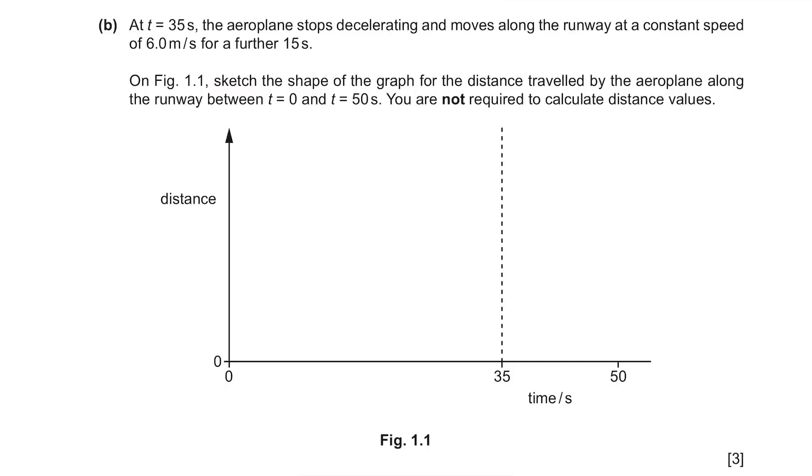I know that some students find drawing graphs challenging but no worries, I got you. Firstly, the distance that the aeroplane travelled when time is 0 is 0. So we start from 0. Then obviously, the distance increased because it travelled across the runway but we also know that there was a change in speed. Therefore, instead of the graph being a straight line like this, it will be a curve.